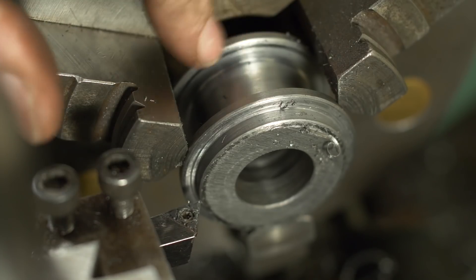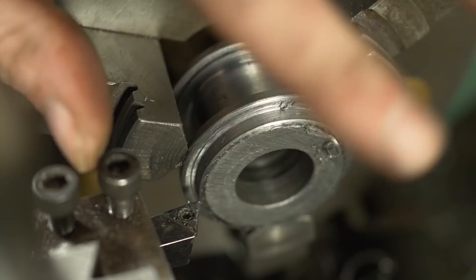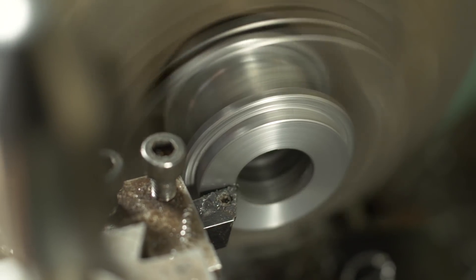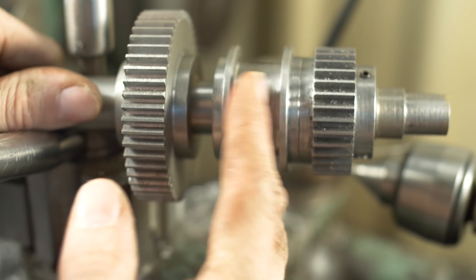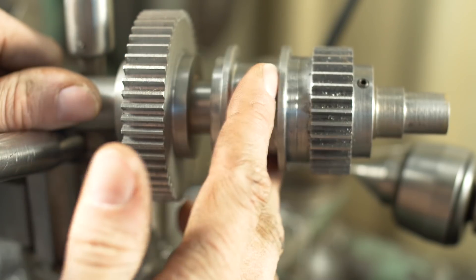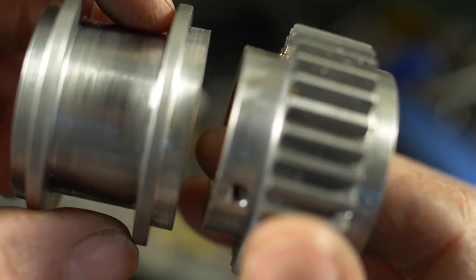I turned all the features in one setup, I had to resort to the bandsaw to part it off though. Now I just need to face this off. This is our dog clutch that will lock into either of these gears. Cutting the dogs will be a slight challenge.